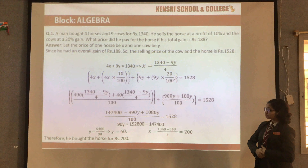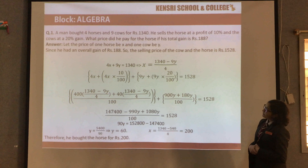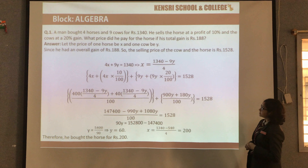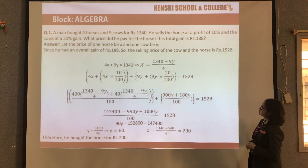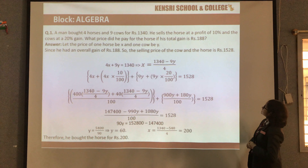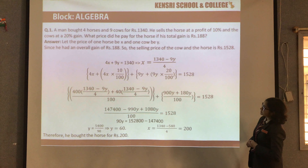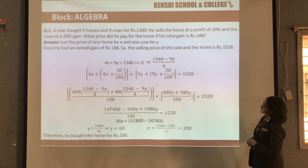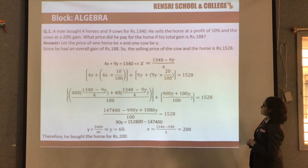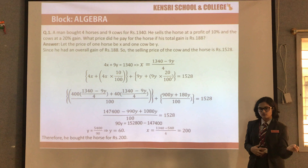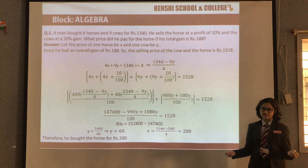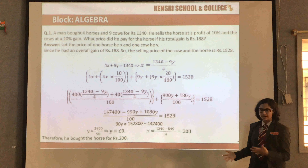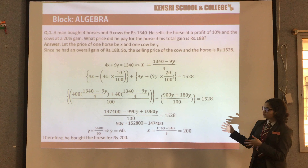Moving on to the question in algebra: a man bought four horses and nine cows for 1340 rupees. He sells the horses at a profit of 10% and the cows at a 20% gain. What price did he pay for each horse, if his total gain is 180 rupees? He paid a different price for one horse and a different price for one cow, so we can take the prices as two variables, x and y, and form equations.